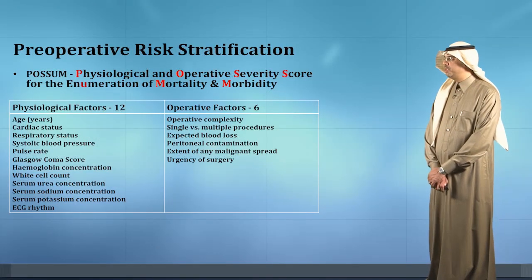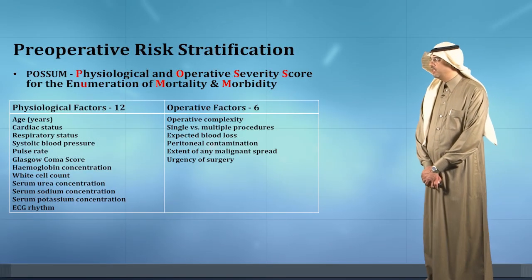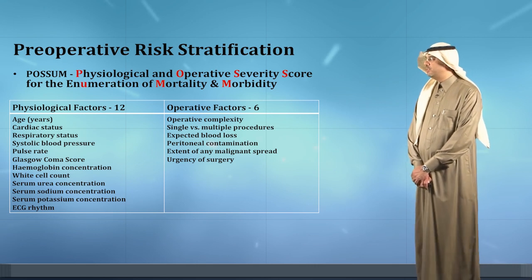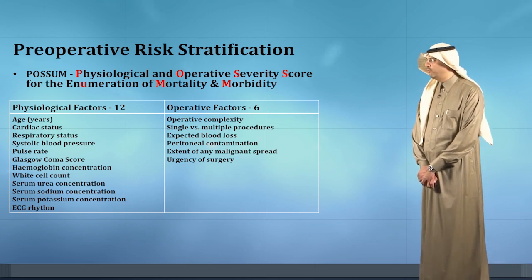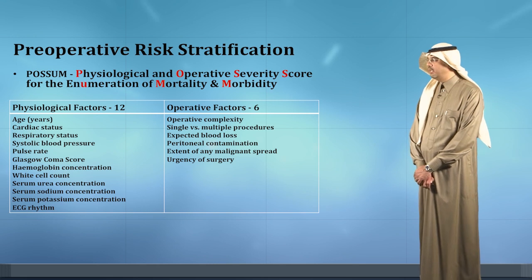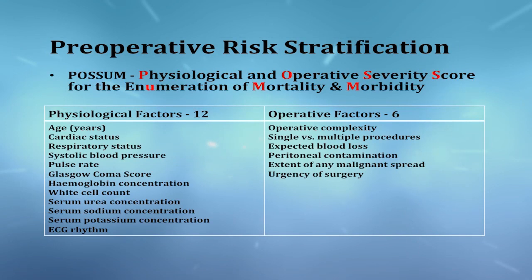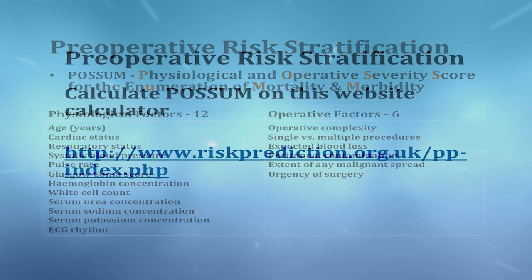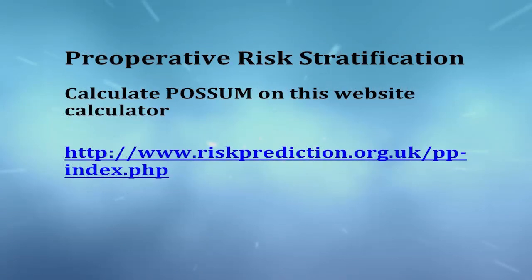The POSSUM classification is a physiological and operative severity score for the enumeration of mortality and morbidity. It depends on 12 major physiological factors in addition to 6 operative factors. The summation of this can be calculated by visiting the provided link.